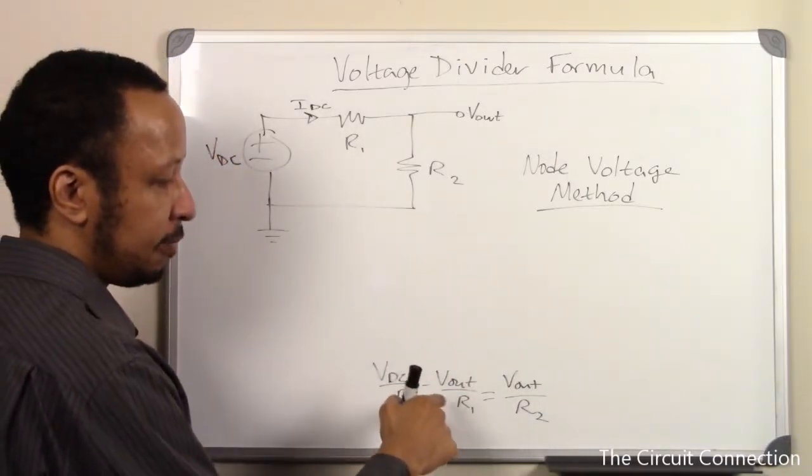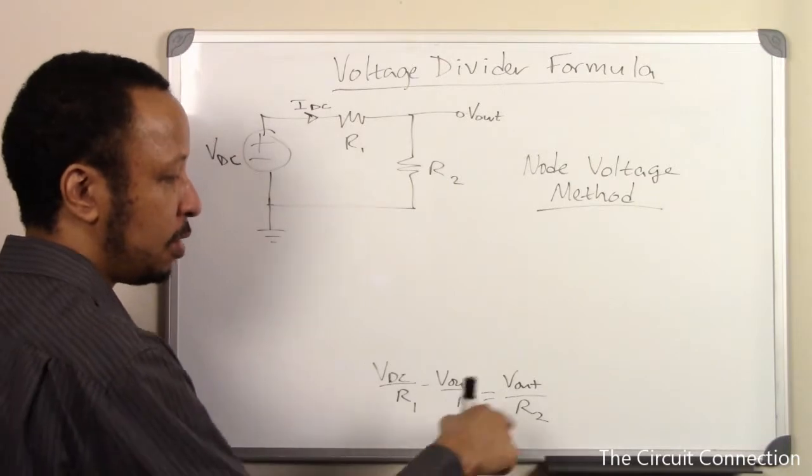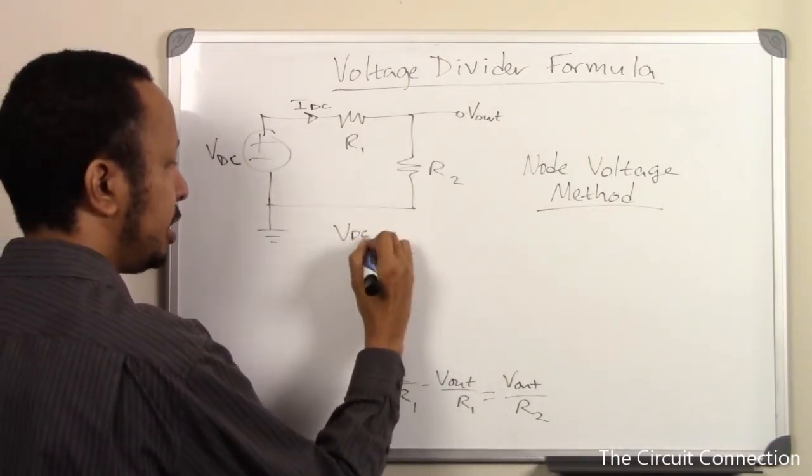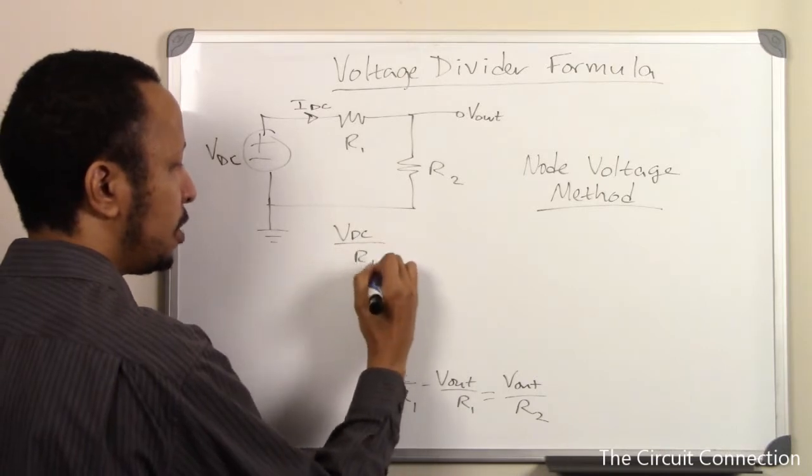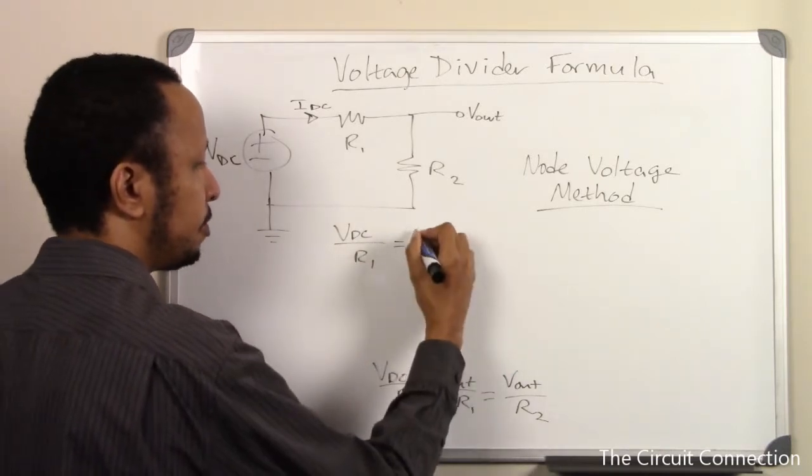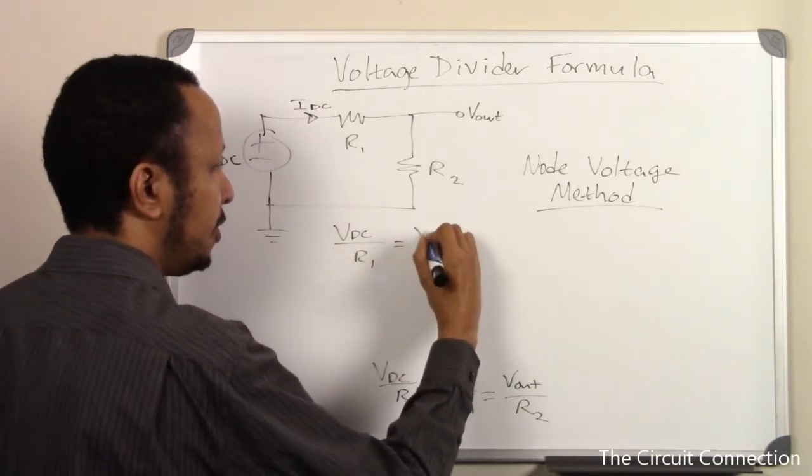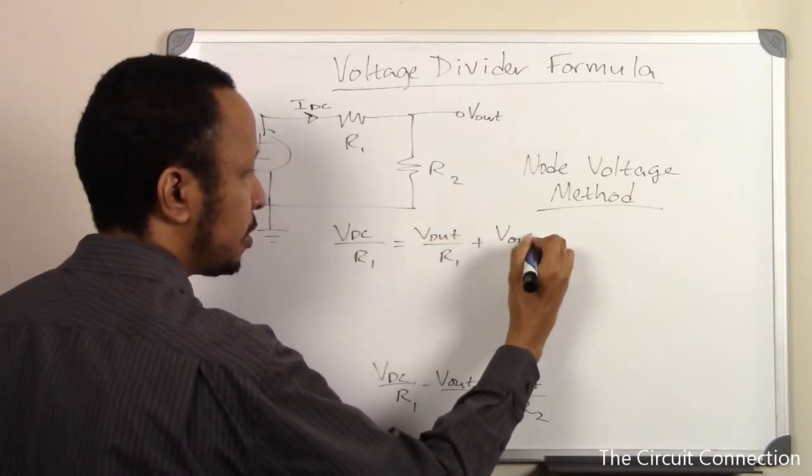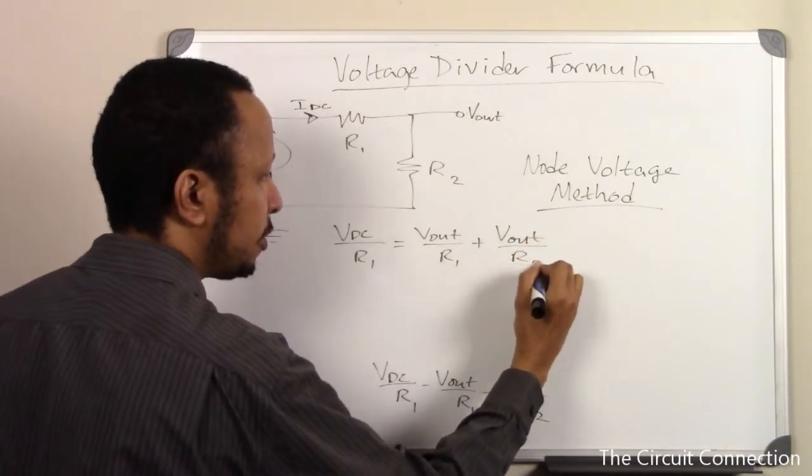Next we're going to bring this negative Vout over R1 over to this side. And so we have VDC over R1 equals Vout over R1 plus Vout over R2.